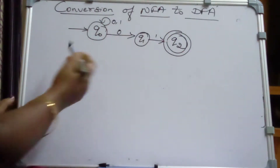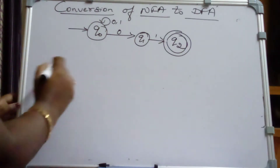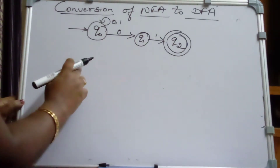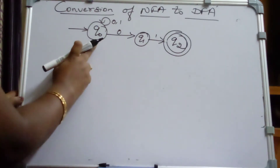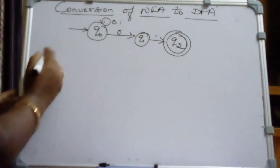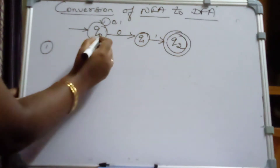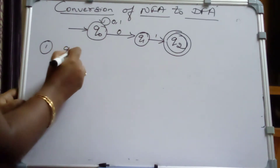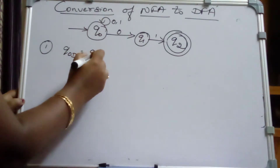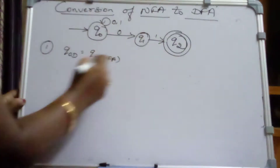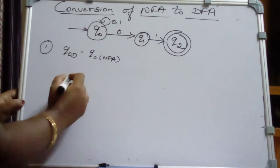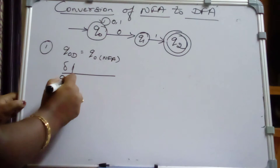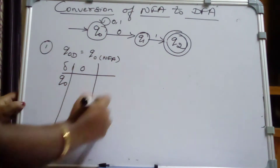So how to convert an NFA to a DFA? First, construct the transition table for the DFA. The starting state of the NFA will also be the starting state for the DFA. So step 1: add the state Q0, the starting state of the NFA, as the starting state for the DFA. Q0 is the starting state for the DFA. Initially, we have state Q0 for input symbols 0 and 1 in the transition table.